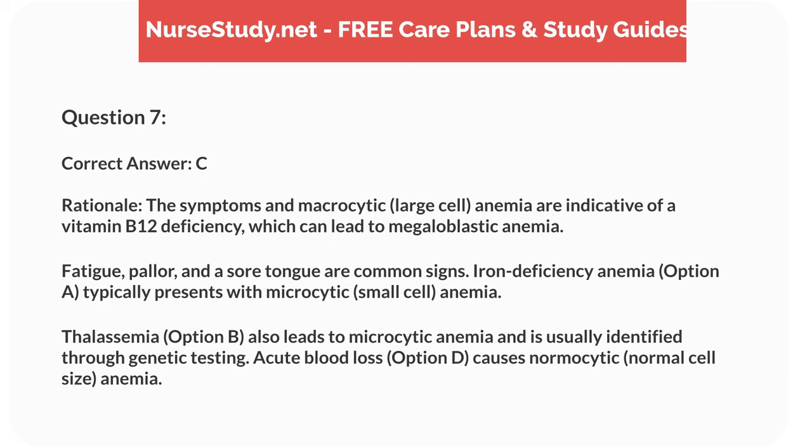Correct answer: C. Rationale: the symptoms and macrocytic, large cell, anemia are indicative of a vitamin B12 deficiency, which can lead to megaloblastic anemia. Fatigue, pallor, and a sore tongue are common signs. Iron deficiency anemia, option A, typically presents with microcytic, small cell, anemia. Thalassemia, option B, also leads to microcytic anemia and is usually identified through genetic testing. Acute blood loss, option D, causes normocytic, normal cell size, anemia.